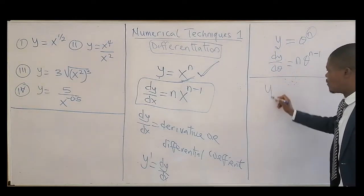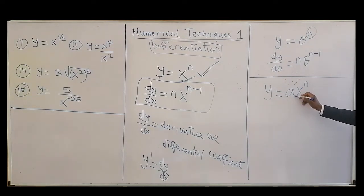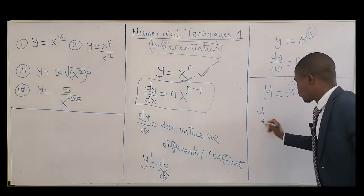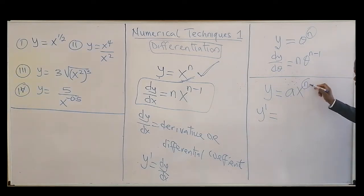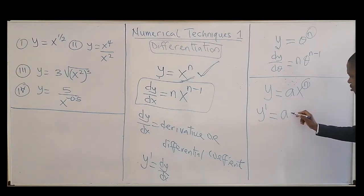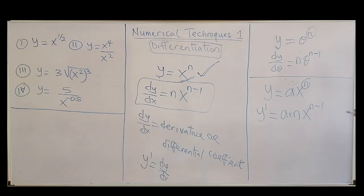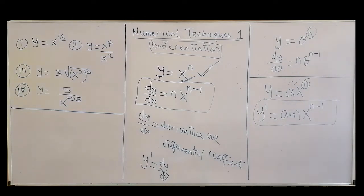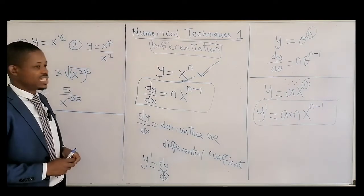Now let's look at the form whereby you have a constant a attached to the function x^n. The derivative — the differential coefficient — is equal to: the constant stays, the power goes to the front giving a times n, then you write the function again and subtract one from the power. So that is the differentiation rule with a constant. Let's dive into questions.